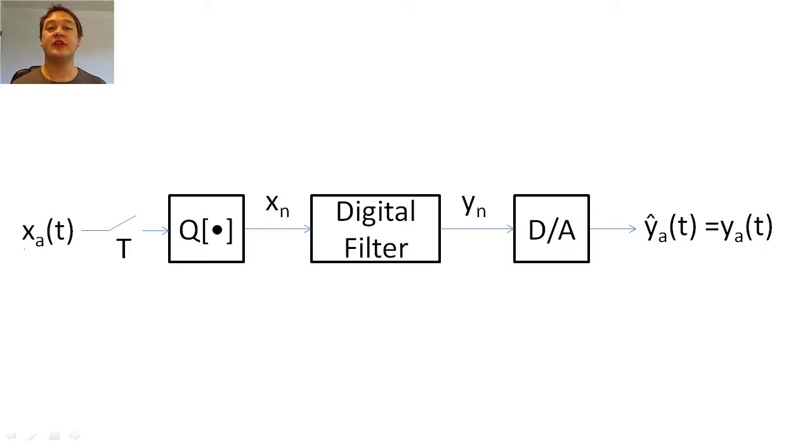In this lecture, we will discuss sampling in greater detail. Earlier, we learned that our basic digital filter consists of a sampling switch, a quantizer, a digital filter, and D2A converter.